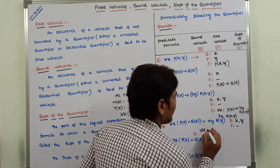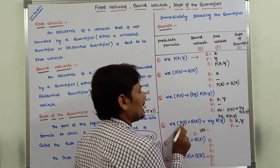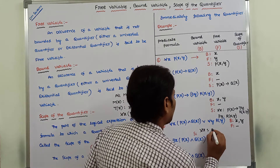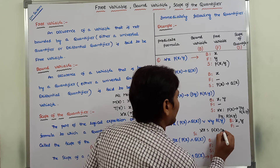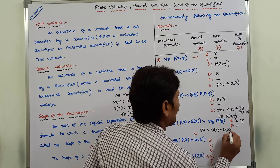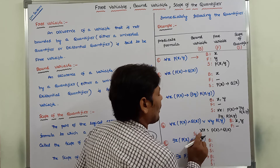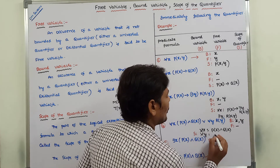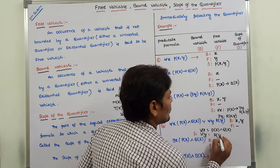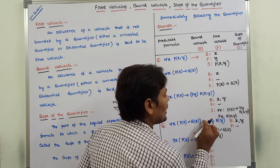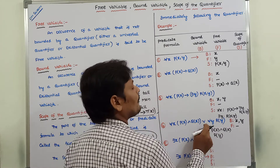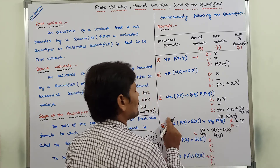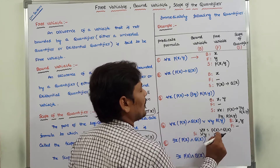The scope of the universal quantifier for all x is the formula immediately following it: P(x) ∧ Q(x). The scope of for all y is R(y). So scope of this quantifier is R(y), and scope of the other quantifier is P(x) ∧ Q(x).